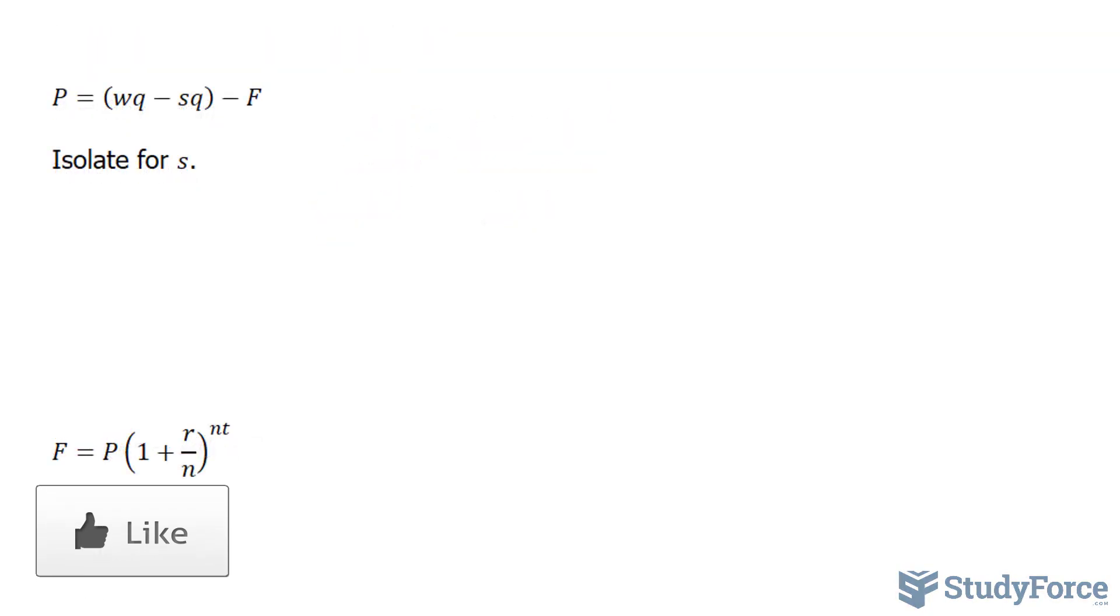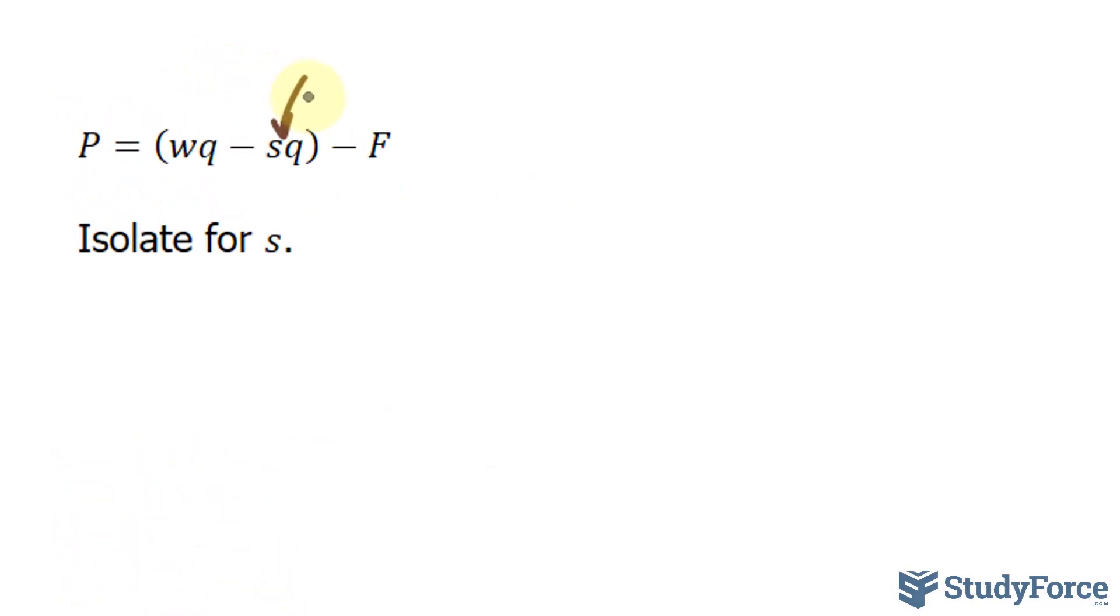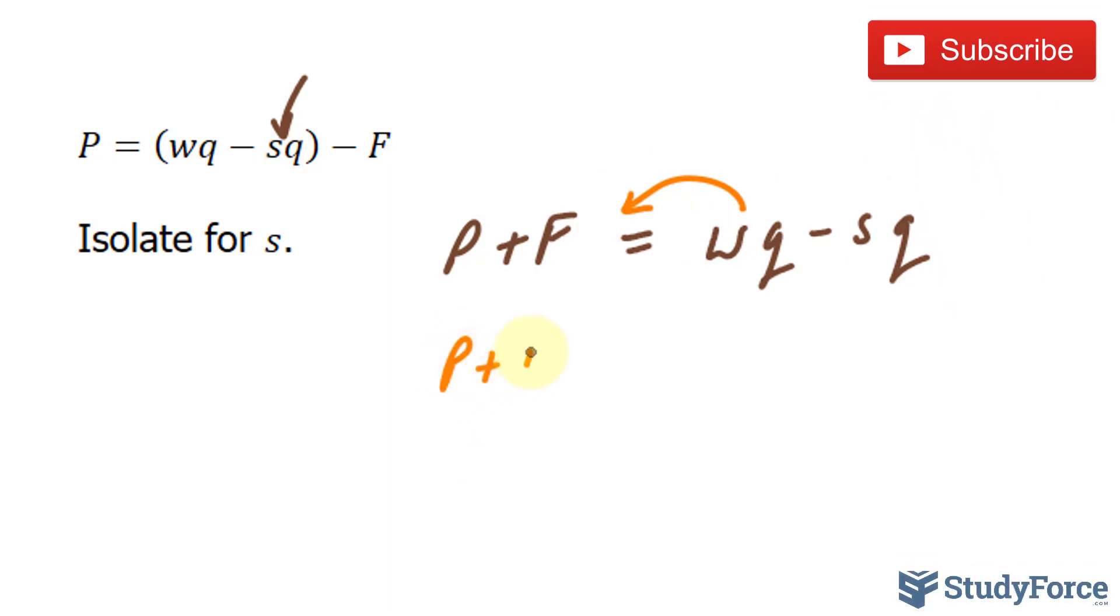Now in the next one they want us to isolate for S. S is right here, and it's found within brackets. What I want to do is take this term over to the other side, and that becomes plus F is equal to WQ minus SQ. Our target variable is right here, so we'll take this term over.